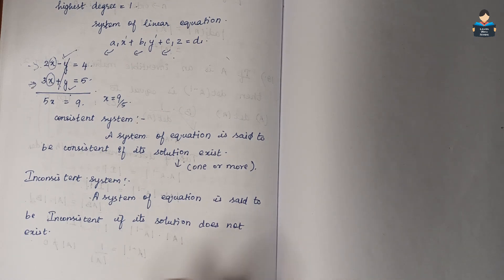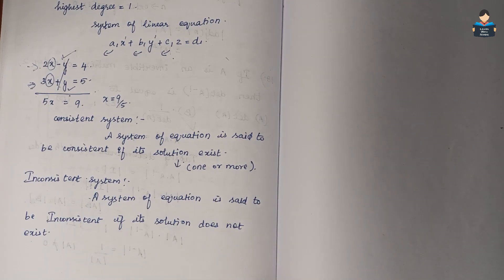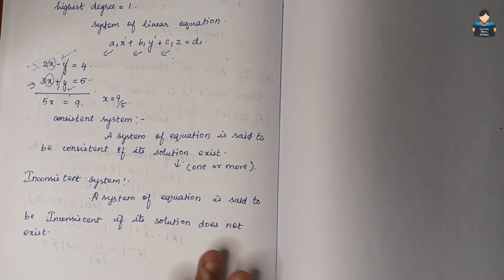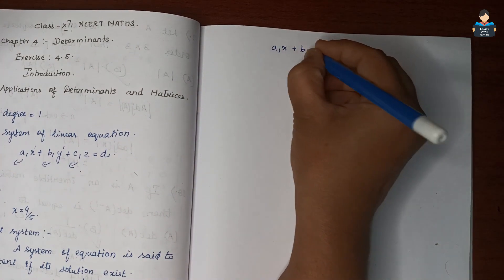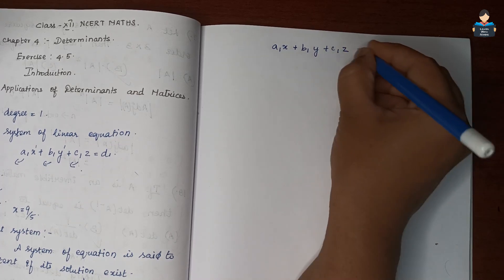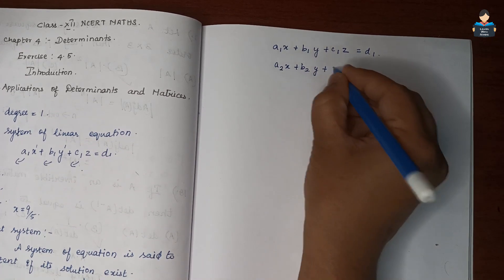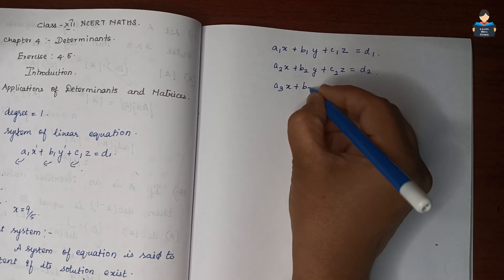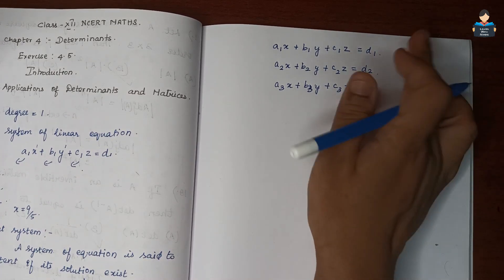We can represent the system of equations using a matrix formula and then solve it using the inverse of the matrix — specifically the inverse of the coefficient matrix. So for the system: a1x + b1y + c1z = d1, a2x + b2y + c2z = d2, and a3x + b3y + c3z = d3, this is our system of three equations.